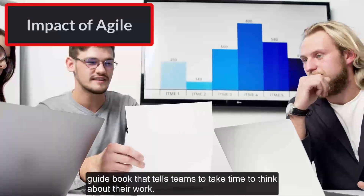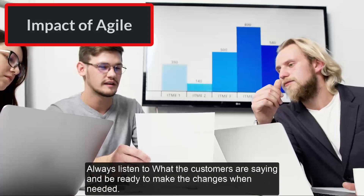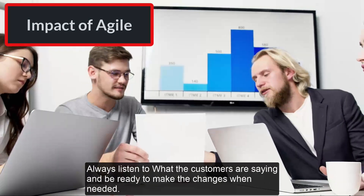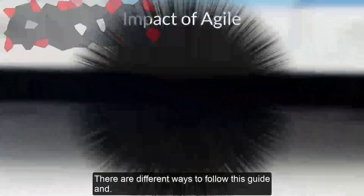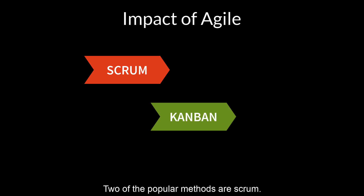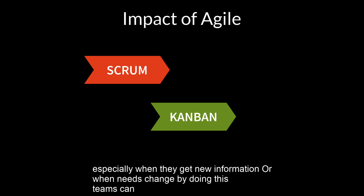Now let's discuss the impact the Agile Manifesto has made. The Agile Manifesto is like a guidebook that tells teams to take time to think about their work, always listen to what the customers are saying, and be ready to make changes when needed. There are different ways to follow this guide.